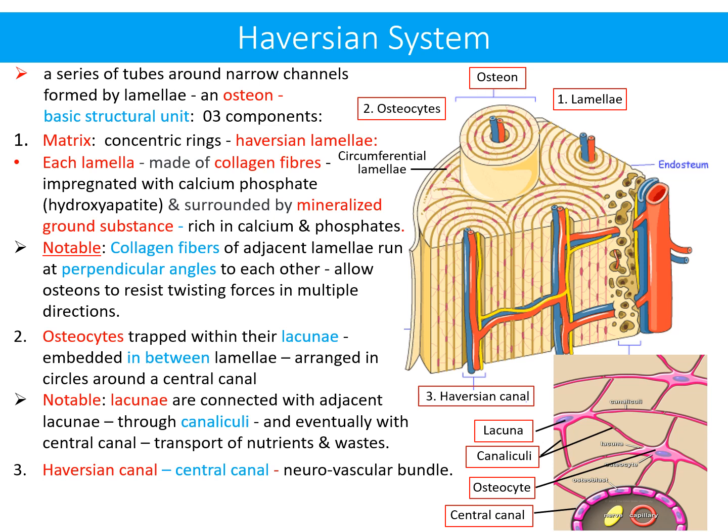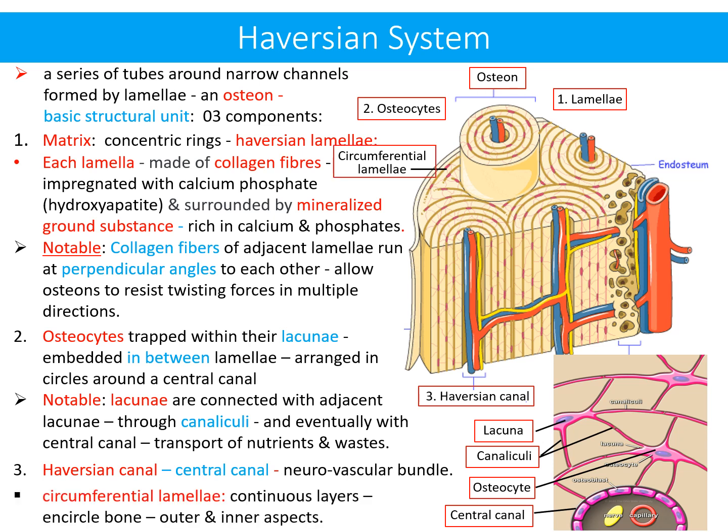Lacunae are connected with adjacent lacunae through canaliculi and eventually with the central canal, serving the purpose of transport of nutrients and waste products. The third component is the central canal, also named the Haversian canal, which lodges the neurovascular bundle. The deficit between the concentric lamellae, especially on the surface of the bone, is occupied by relatively irregular lamellae named circumferential lamellae.